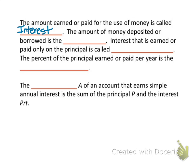The amount of money deposited or borrowed is the principal. Interest that is earned or paid only on the principal is called simple interest, and we'll be talking about that today. The percent of the principal earned or paid per year is the annual interest rate.